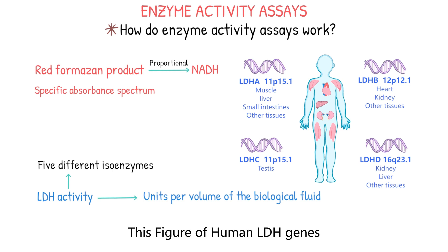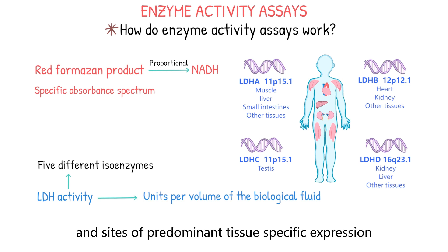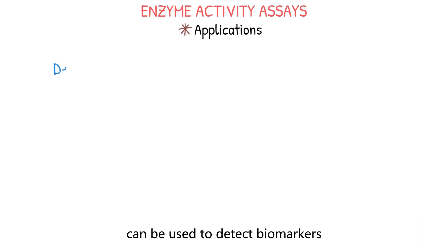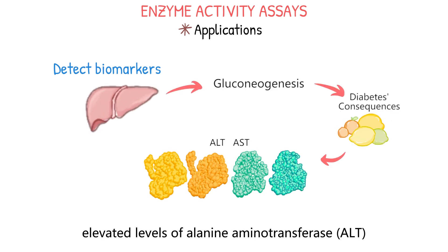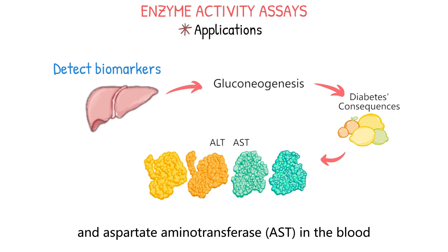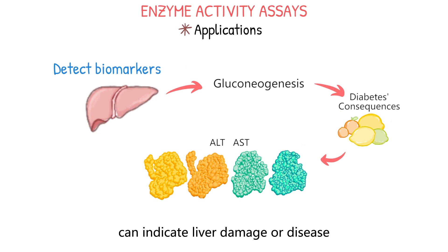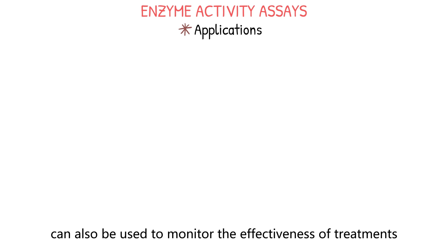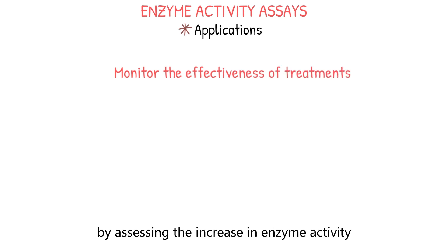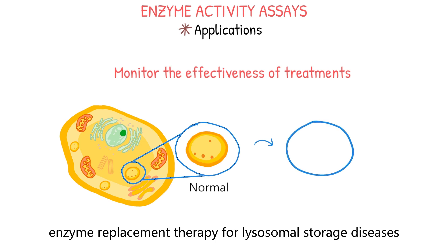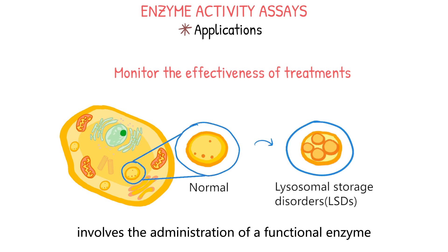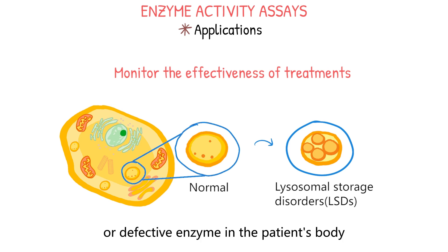This figure of human LDH genes shows their chromosomal location and sites of predominant tissue-specific expression. Enzyme activity assays can be used to detect biomarkers for various diseases. For example, elevated levels of alanine aminotransferase (ALT) and aspartate aminotransferase in the blood can indicate liver damage or disease. The measurement of enzyme activity can also be used to monitor the effectiveness of treatments by assessing changes in enzyme activity in the patient's blood or tissue. For example, enzyme replacement therapy for lysosomal storage diseases involves the administration of a functional enzyme to replace the deficient or defective enzyme in the patient's body.